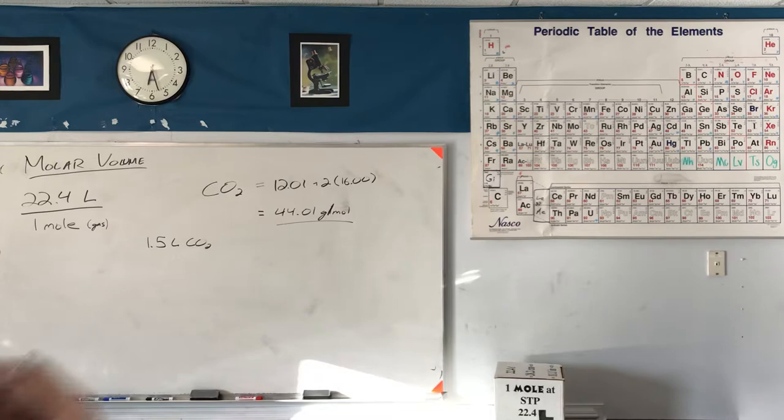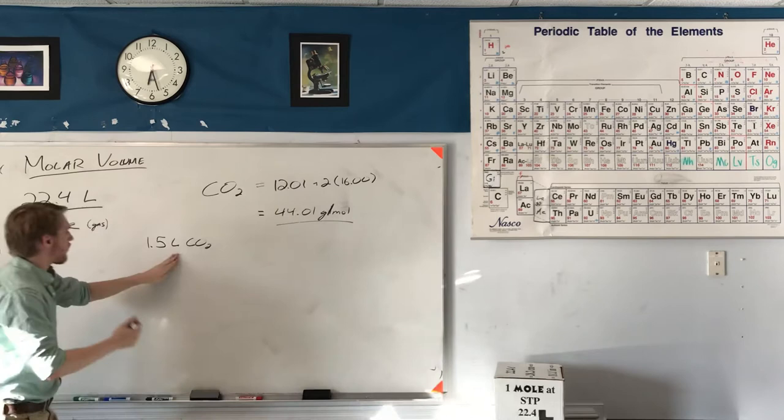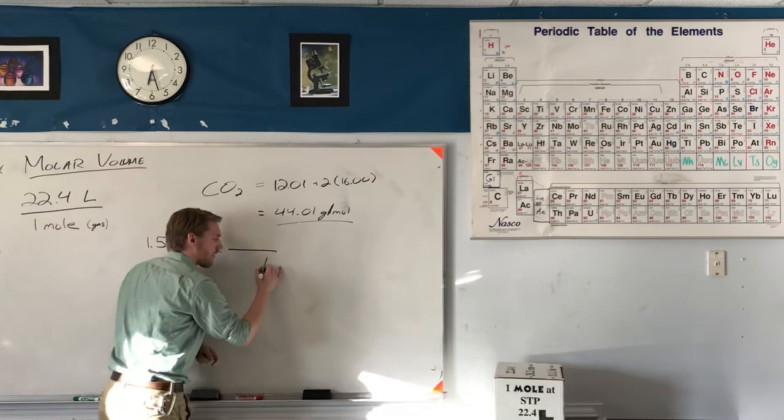It doesn't matter, but it would have been cool. Anyway, if I have 1.5 liters of CO2, we can use the molar volume. This is a conversion factor just like Avogadro's number, just like molar mass. If I have 1.5 liters of CO2, I'll multiply by the molar volume. Let's set it up as a conversion factor. I want to cancel my liters, so I put that on the bottom, and I want my moles to be on top.